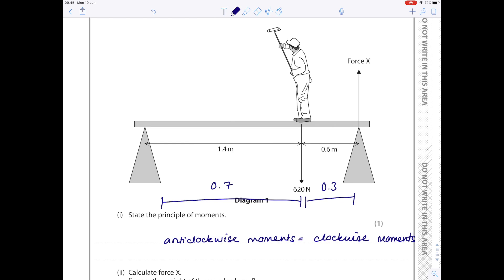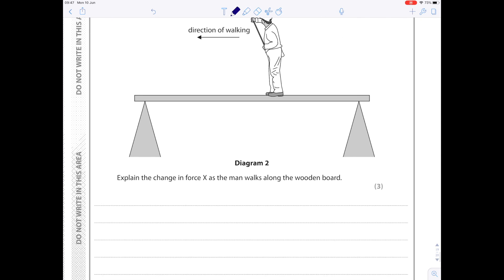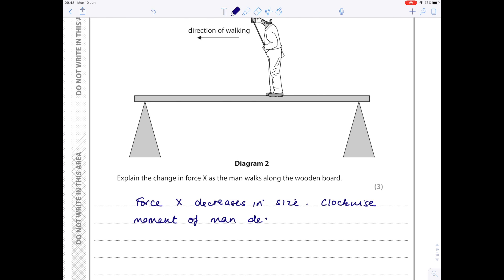The man walks to the other end of the wooden board, as shown in diagram two. Explain the change in force X as the man walks along the wooden board. We know because he's moving to the opposite end that force X must decrease in size. In terms of moment, the clockwise moment of the man must decrease, whilst the anti-clockwise moment increases.